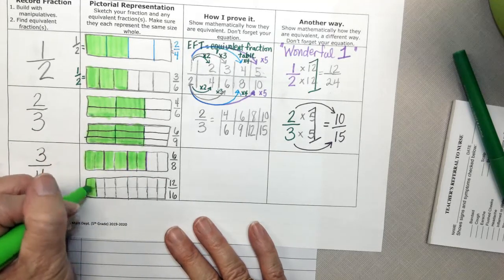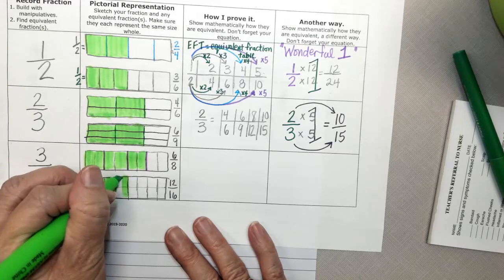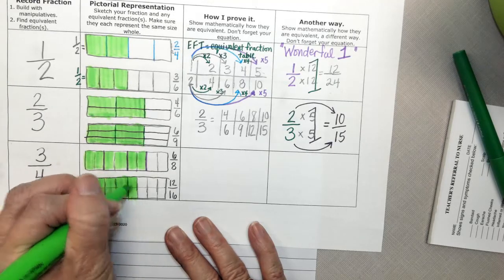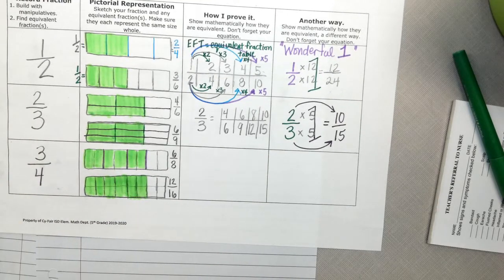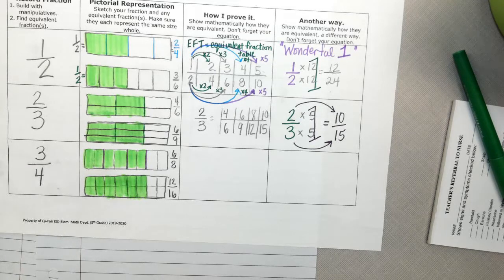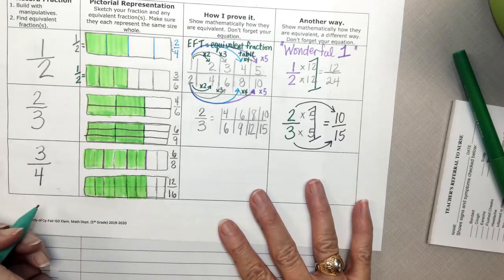Shade in 12. 2, 4, 6, 8, 10, 12. Well, looky there. So we know these are the same.